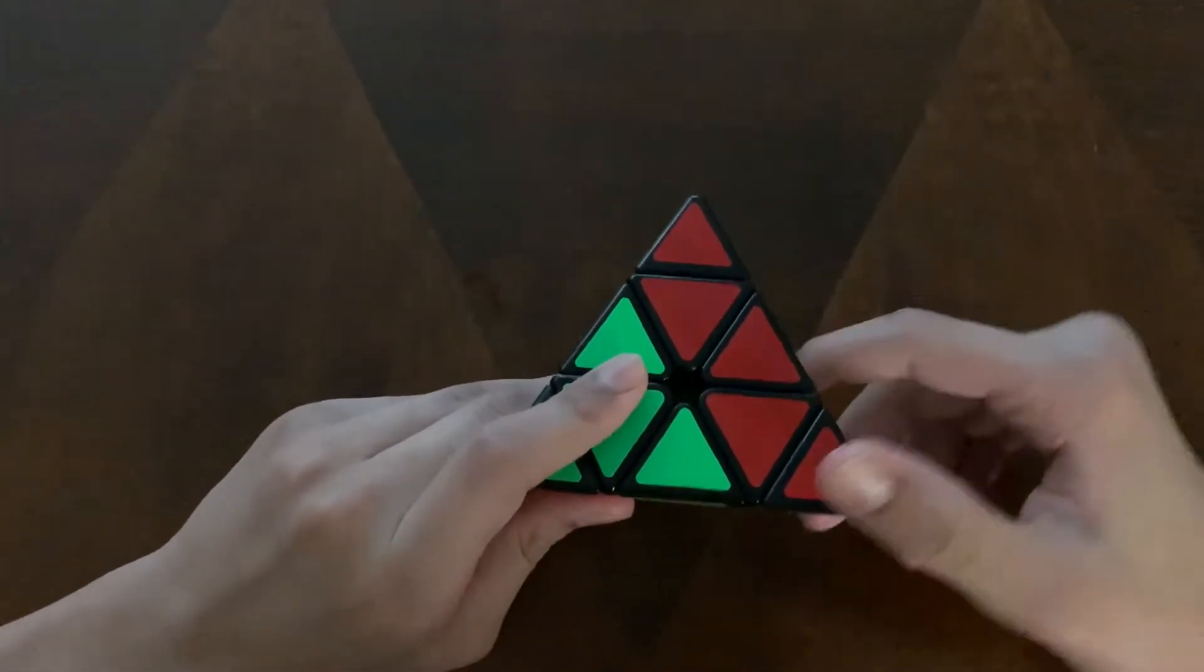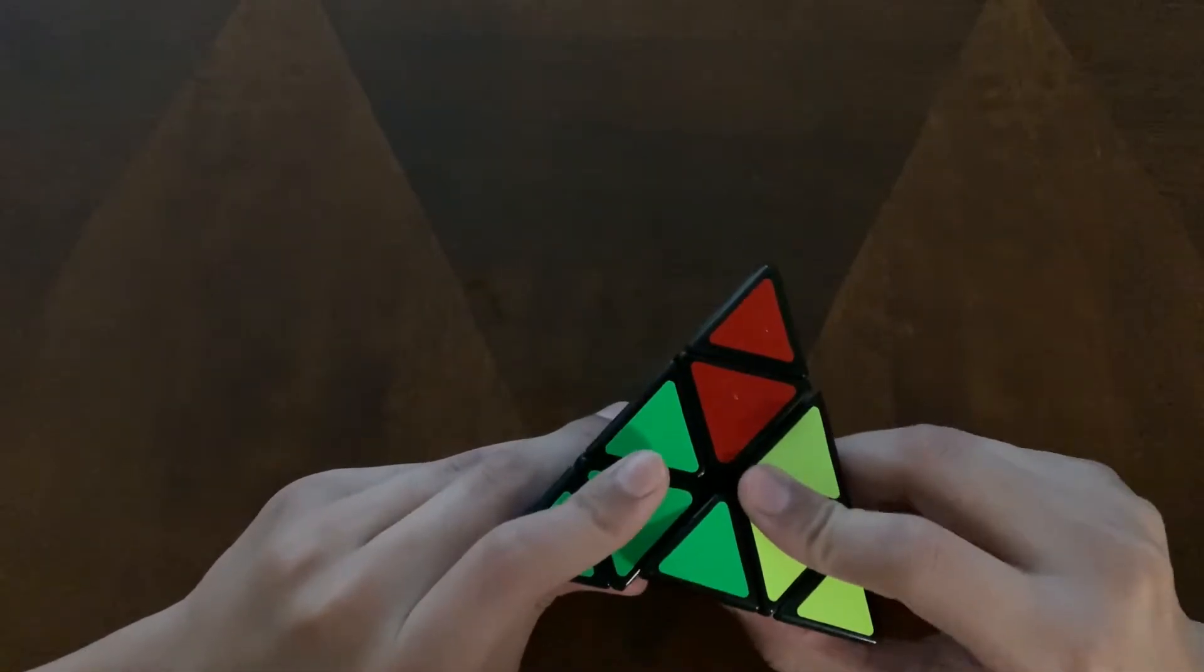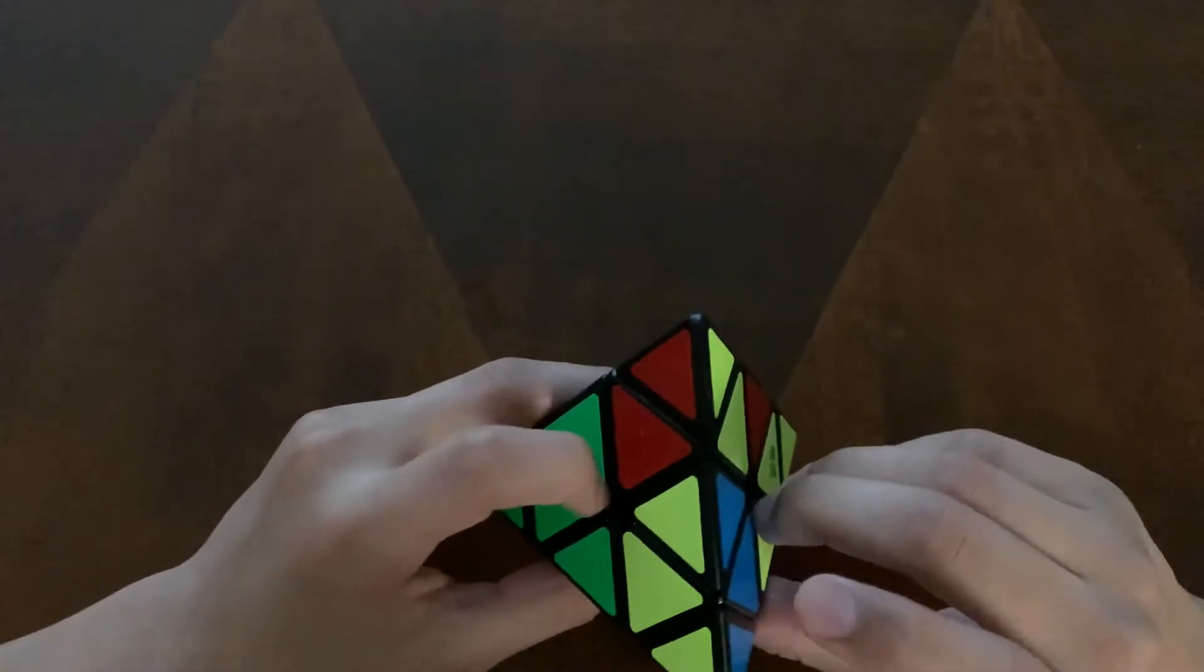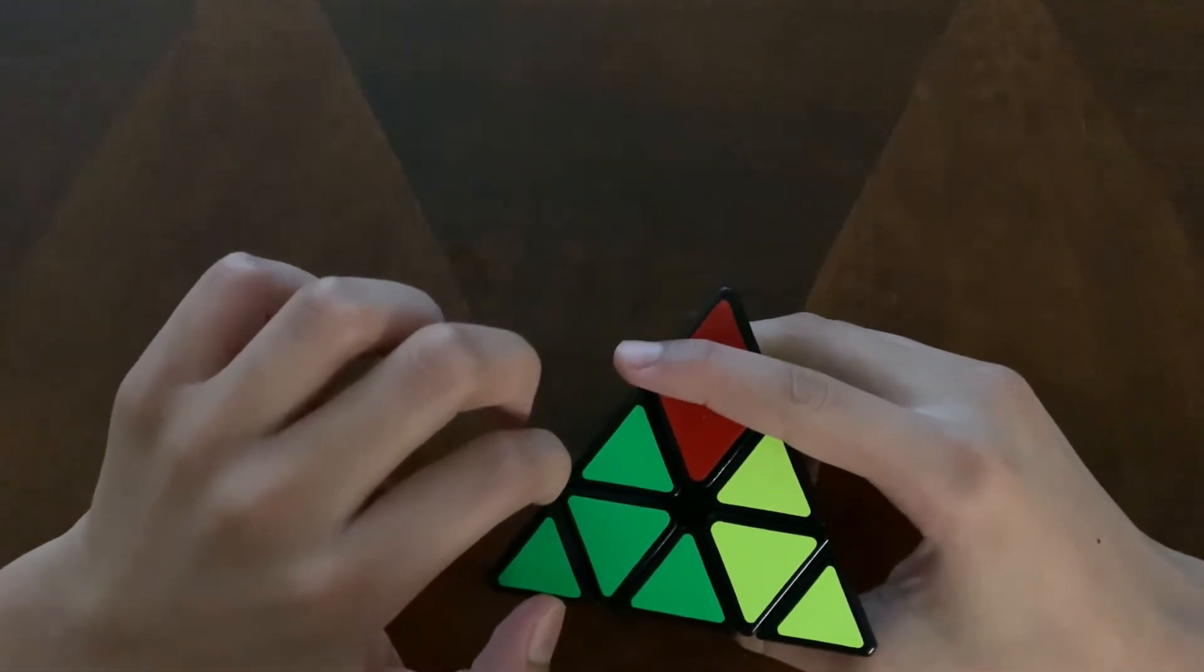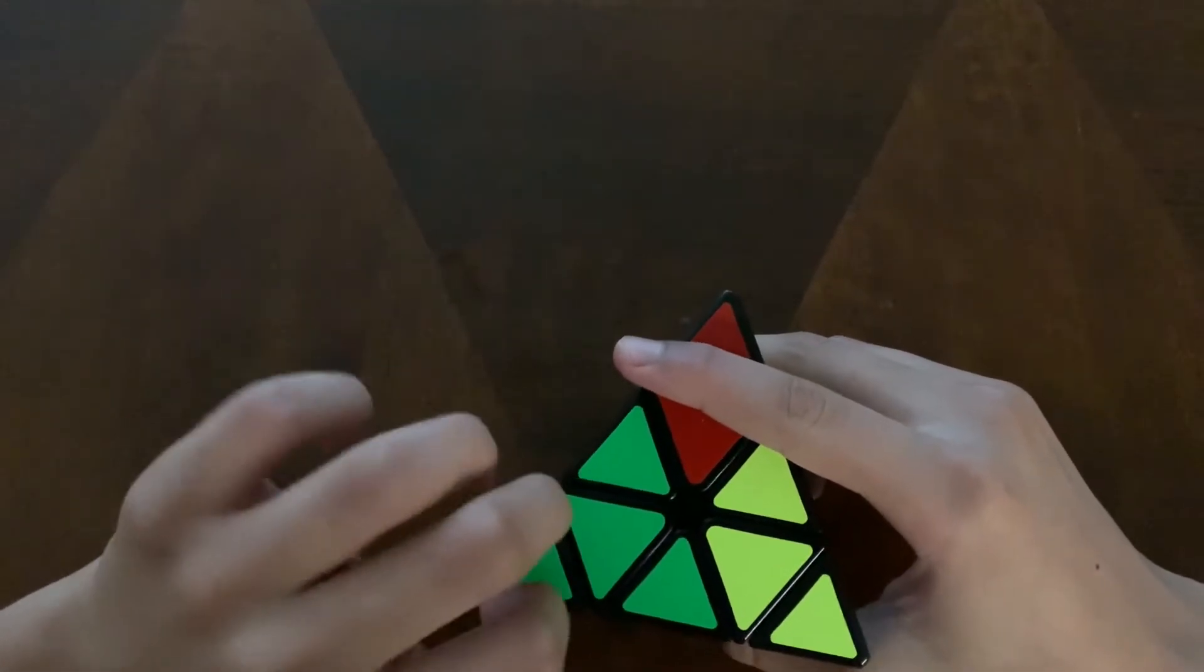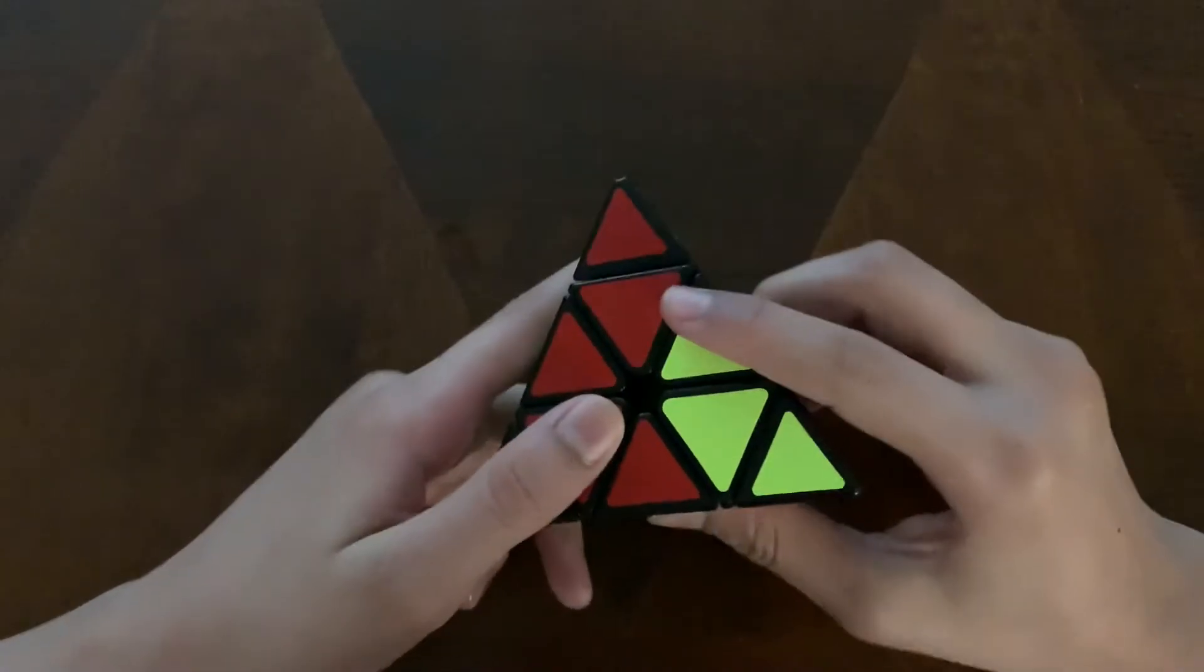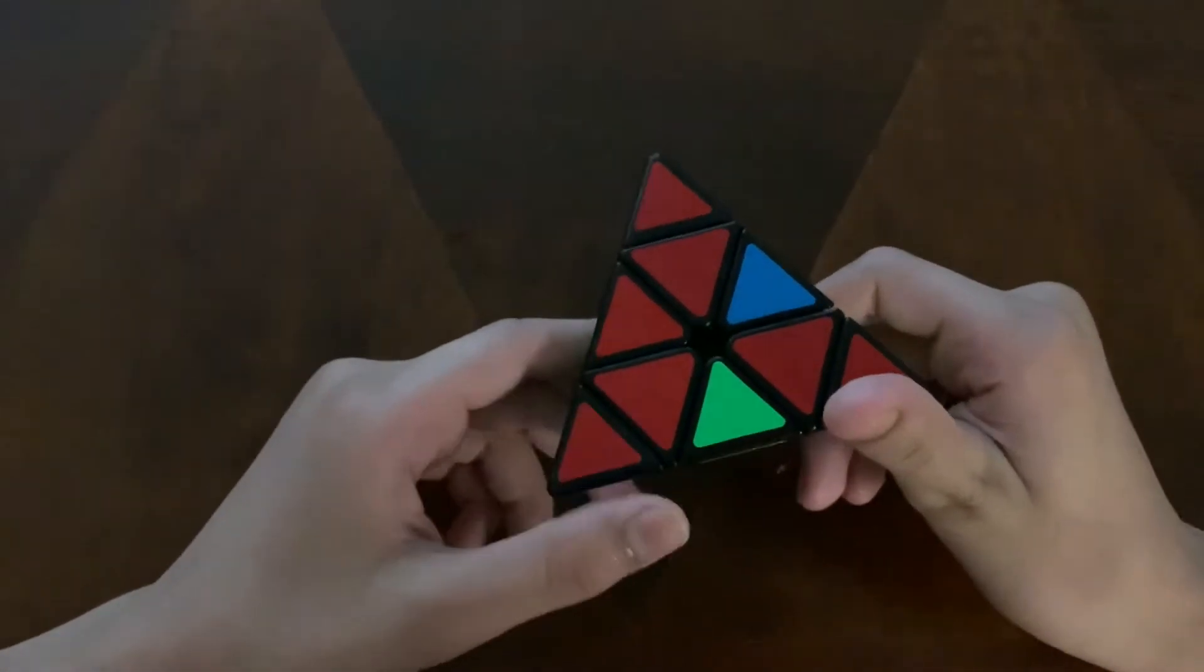Next we're going to do the same but it's going to be on the right side. Turn it back. Now as you can see both, it should still have the piece that you started it with first aligning. Then we're going to turn it back and turn it back up.